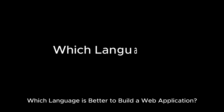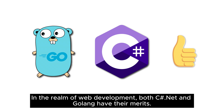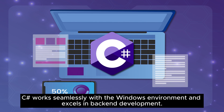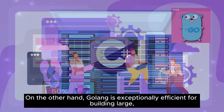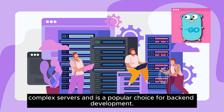Which language is better to build a web application? In the realm of web development, both C-sharp .NET and Golang have their merits. C-sharp works seamlessly with the Windows environment and excels in back-end development. On the other hand, Golang is exceptionally efficient for building large, complex servers and is a popular choice for back-end development.